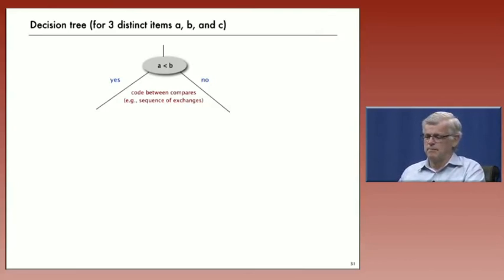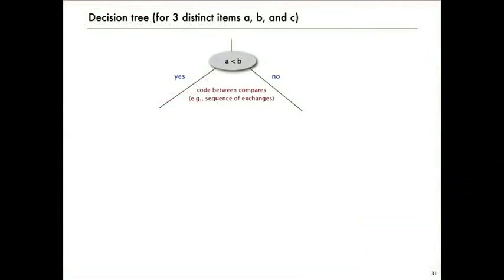And then there's two cases. Either it's yes or it's not yes. Let's say they're distinct. And there'll be some code between the compares. But either way, then there's gonna be a different compare. If A is less than B, maybe the next compare is B against C.